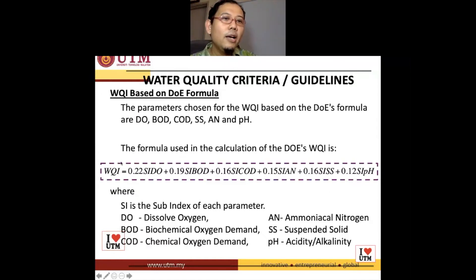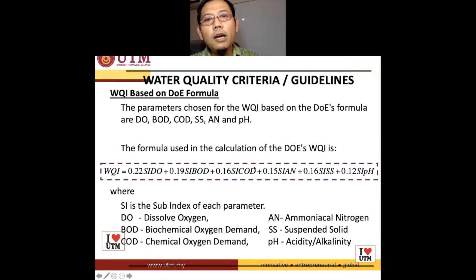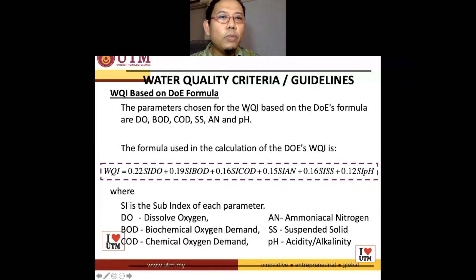This is the formula of water quality index: 0.22 times the sub-index of DO (dissolved oxygen), plus 0.19 sub-index of BOD, plus 0.16 sub-index of COD, plus 0.15 sub-index of ammoniacal nitrogen, and suspended solids, and also the sub-index of pH. There are six parameters to be considered in calculating WQI.